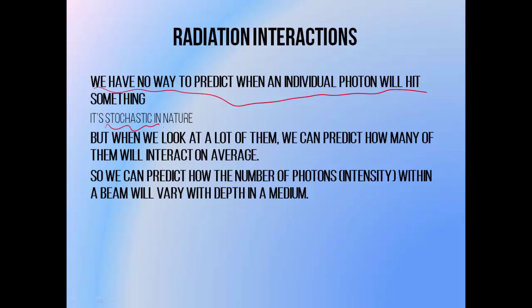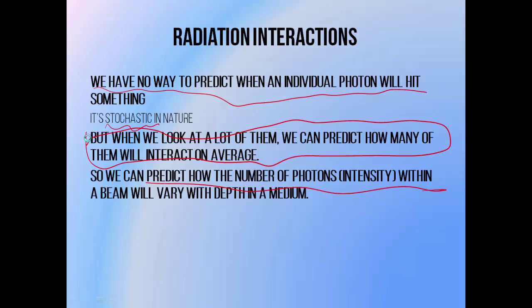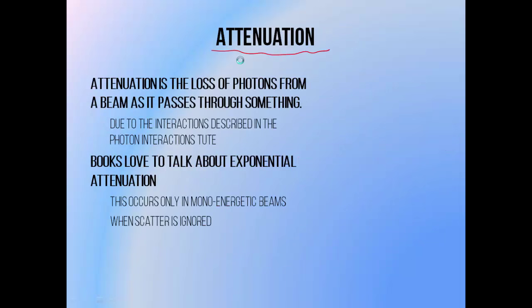That means that individually, you have no idea what's going to happen, but when you look at large populations — for example, a beam containing a large number of photons — we can get quite a precise estimate of what's going to happen on the whole. So when it comes to photon beams, we can predict how many on average are going to interact as they travel a certain distance through a medium. The loss of photons as a beam travels through a medium is called attenuation.